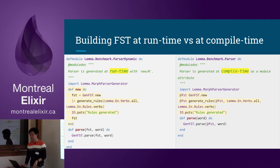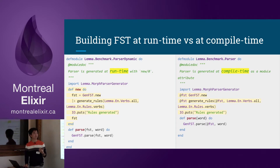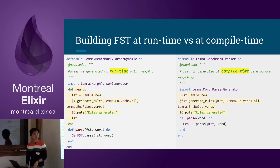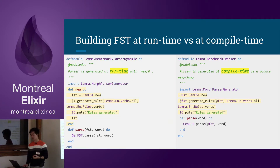Another thing we want to explore is the difference between building the FST at runtime versus at compile time. On the left, we have a 'new' method that generates the rules and returns the FST at runtime. On the right, we use a module attribute to build the FST at compile time — so when you run mix compile, it already builds the FST for you, and when you run the program, the FST is already there.